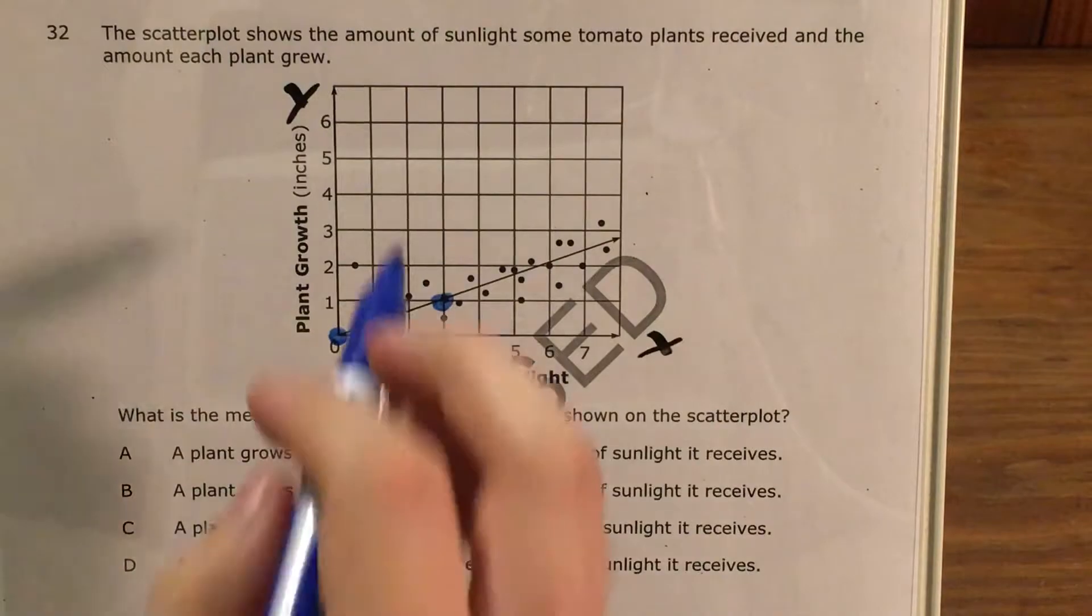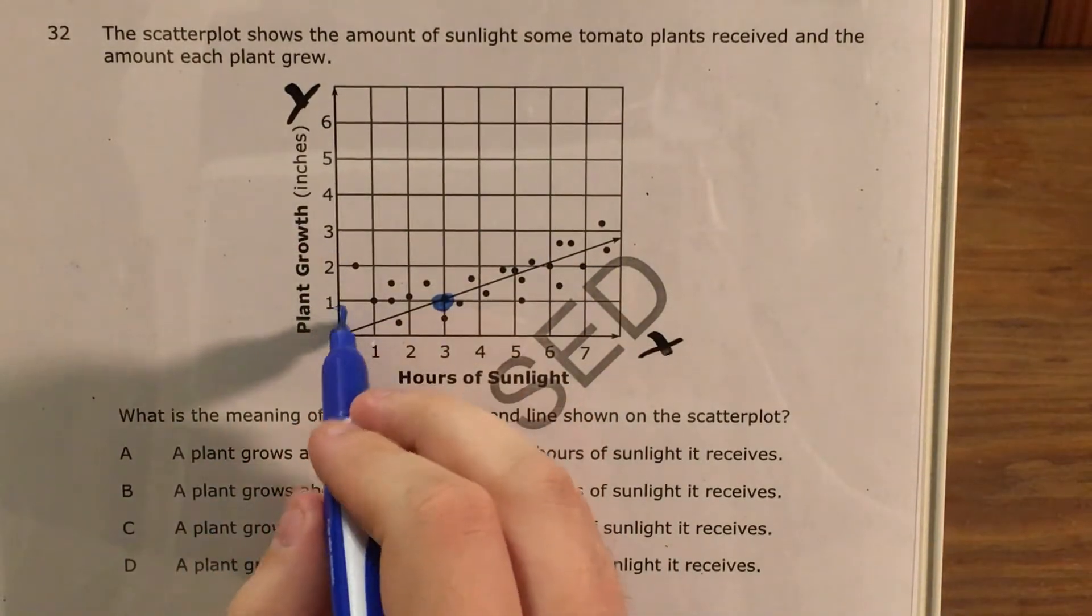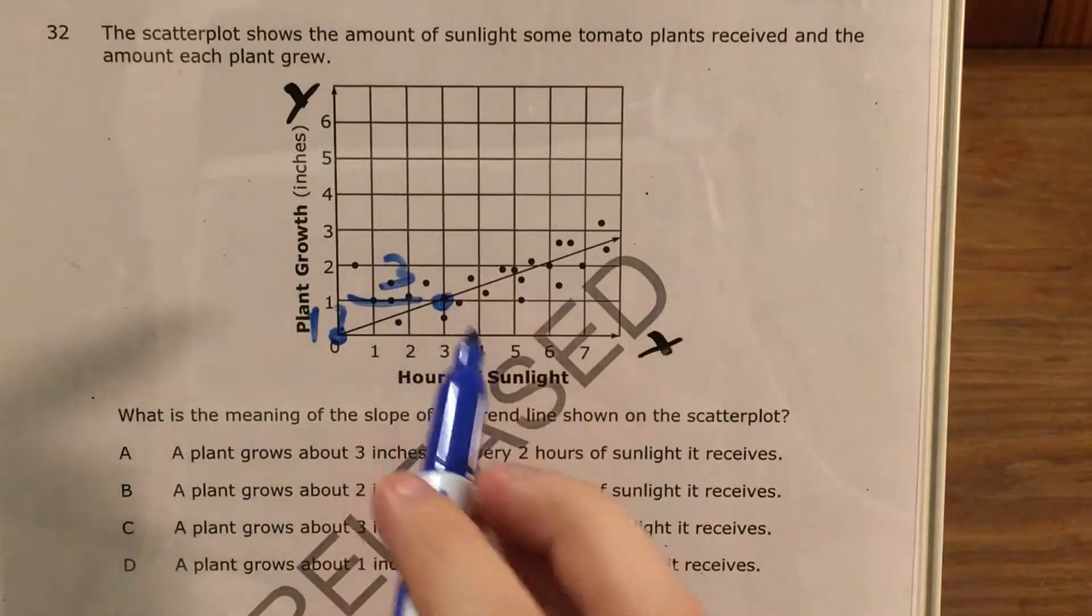Now if I think about slope, I think about that as how far up and how far right I'm going. So that's up 1 and right 3.